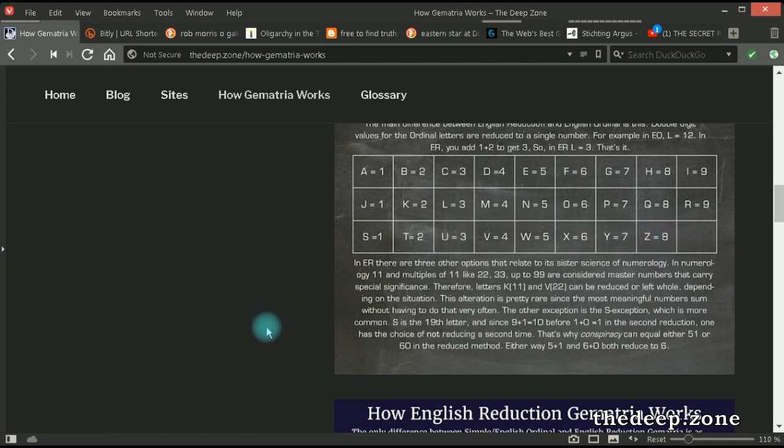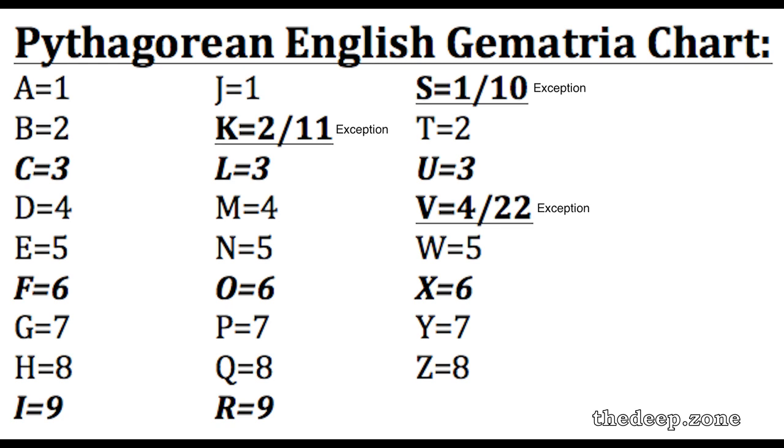Now, there are three exceptions as far as letters go, where numbers are not reduced or not reduced as much, like in single reduction. Let's start there with, with S.